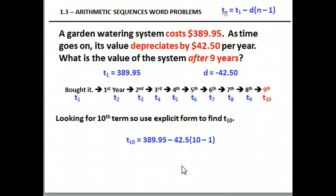If you plugged it all in, you should get $389.95 minus 42.5, this time times 10 minus 1, which is 9. Pause here if you don't want to find the answer. Your answer should be, if you do all of your math correctly, $7.45.